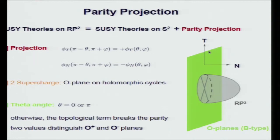We construct the supersymmetric theory on RP2 by starting from the supersymmetric theory on the two-sphere and imposing a parity projection condition on the various fields, where the parity maps a point on the two-sphere to its antipodal point. We impose this parity projection on the scalar fields describing tangential and normal directions to the orientifold plane. Among the four supercharges on the two-sphere, two survive on RP2, and from those one can show the orientifold plane must wrap holomorphic cycles. Also, the two-dimensional theta angle must be either 0 or pi on RP2, distinguishing the O+ and O- plane.